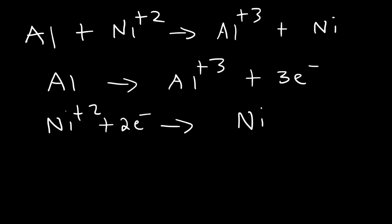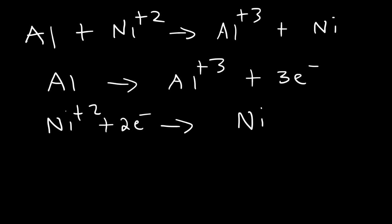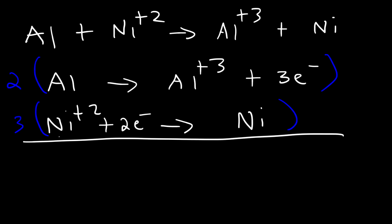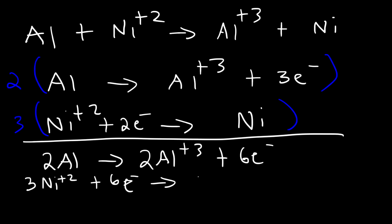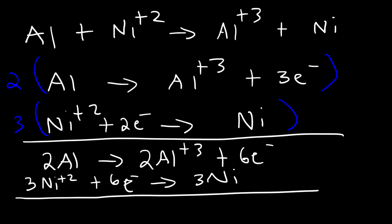Before we can add the two half reactions, we need to make sure the number of electrons are the same on both sides. The least common multiple of 2 and 3 is 6, so we need to get 6 electrons on both reactions. Let's multiply the first one by 2 and the second one by 3. So we have 2Al → 2Al³⁺ + 6e⁻, and below that: 3Ni²⁺ + 6e⁻ → 3Ni. Now we add these two half reactions — notice the electrons cancel, so the charges will be balanced.